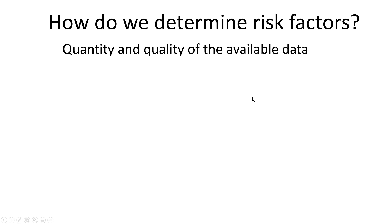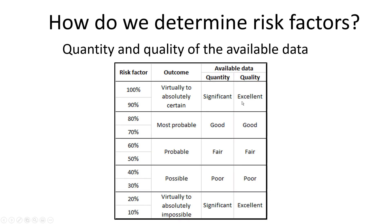How do we determine risk factors? It's pretty subjective, but we look at the quantity and quality of the available data. We have a little matrix that helps guide us: the risk factor in percent is on the left, and the outcome ranges from 'virtually certain,' which is a high chance of success, to 'virtually to absolutely impossible,' which is a low factor. This gives you a guide on how to rank the different items.